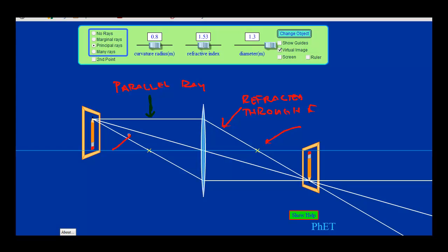The second one is a ray passing through the center of the lens. And we see that ray is not refracted. It just passes straight through no problem.